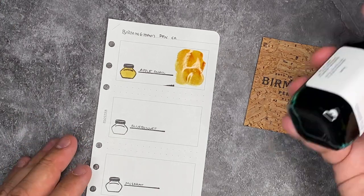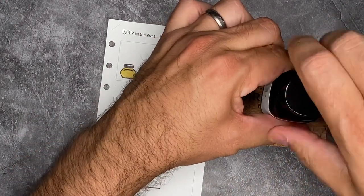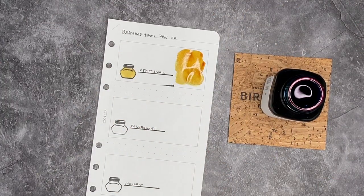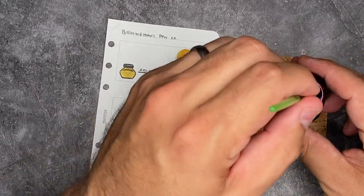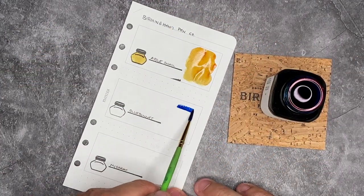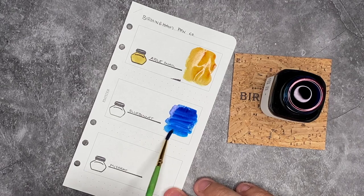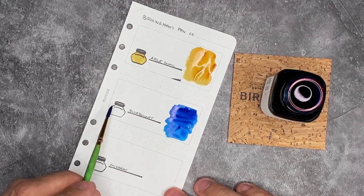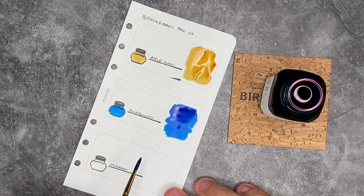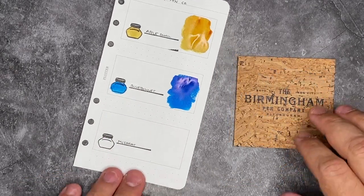What I also love about this Plotter paper is that I can handle this ink. Most other paper wouldn't be able to do that unless it was fountain pen ink specifically. So that is super nice. All right. Apple Snail. Let's take a look at Blue Bonnet. I definitely remember seeing this one on the website. It had just such a bright, beautiful blue color to it. Look at that. That's super nice.